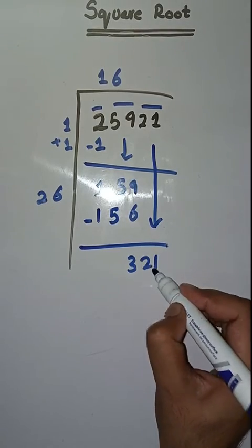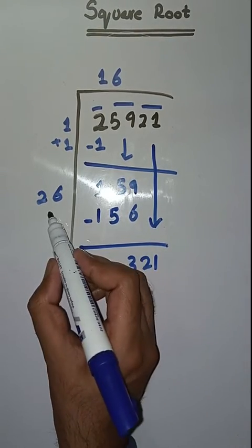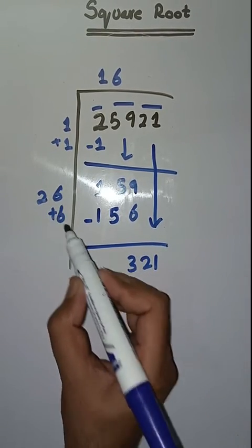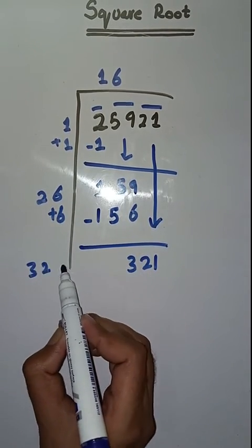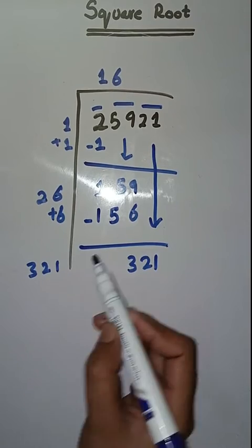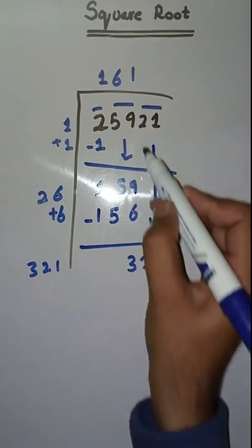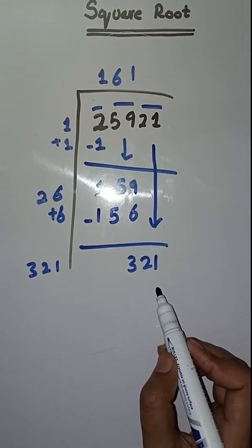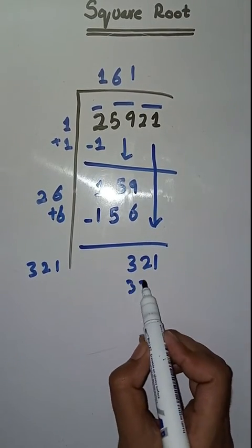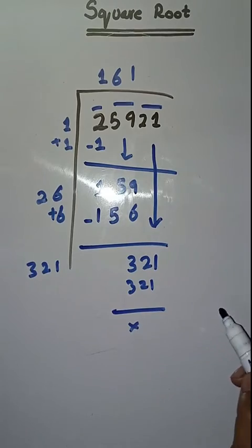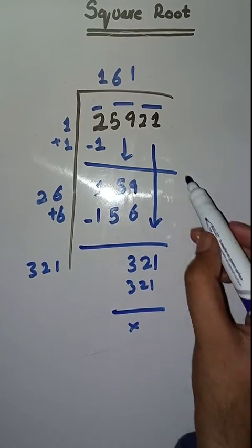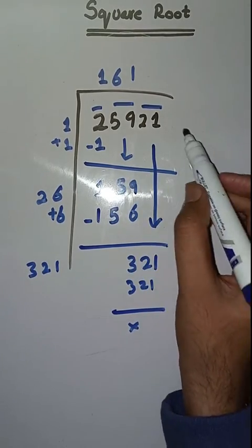Next we bring down 21. We do 26 plus 6 which is equal to 32. Now we take the number 1: 321 times 1 equals 321, so we completely solve it. The square root of 25921 is 161.